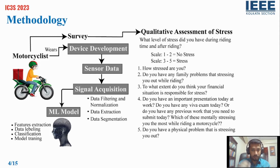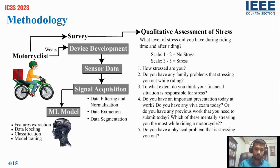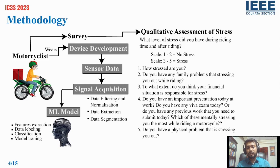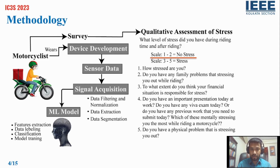As you can see on the right side, this is the qualitative assessment of stress. The survey questions were mainly used before and after motorcycle riding. The scale is one to three: one to two is no stress, and three to five is stress.